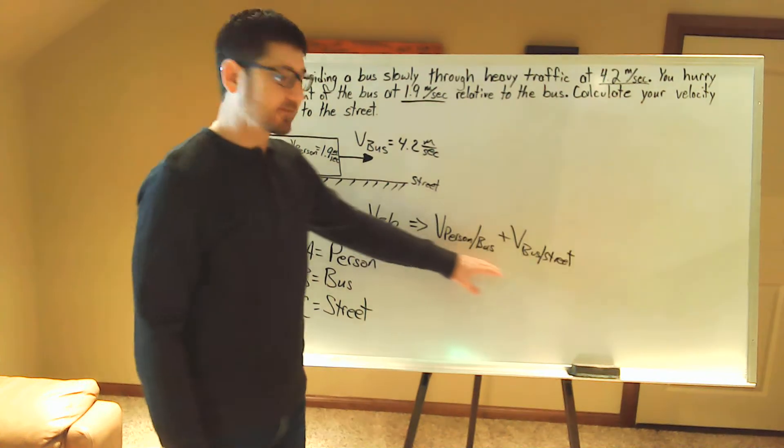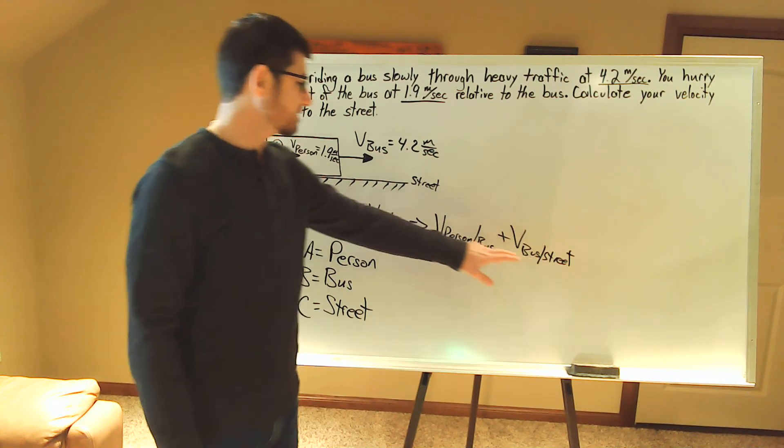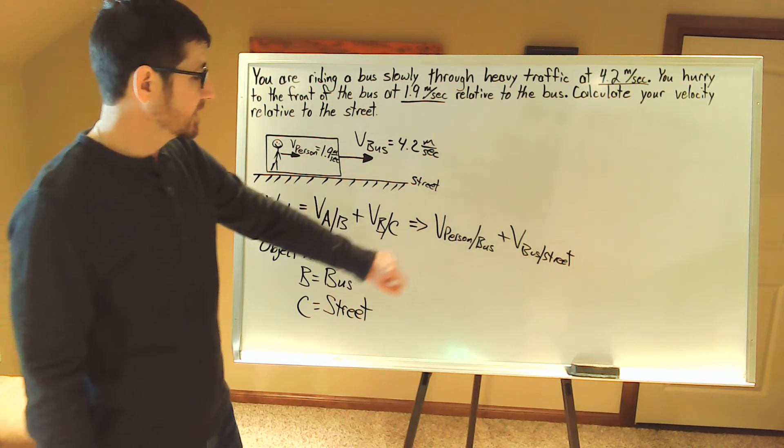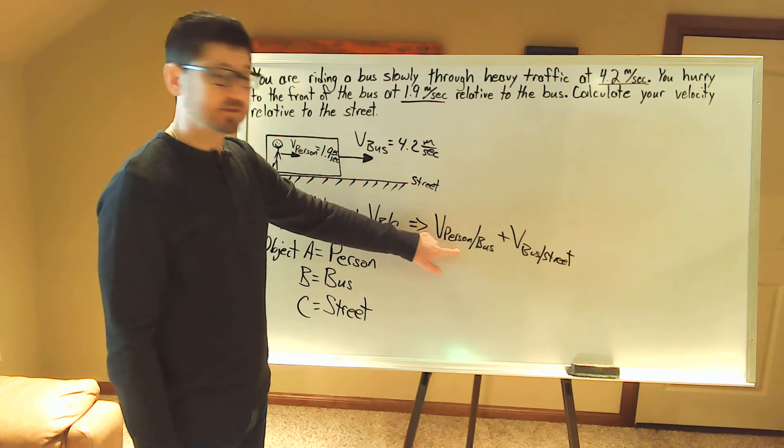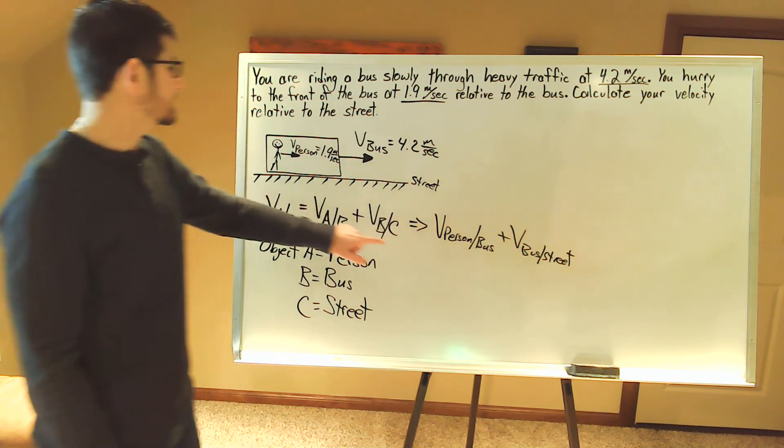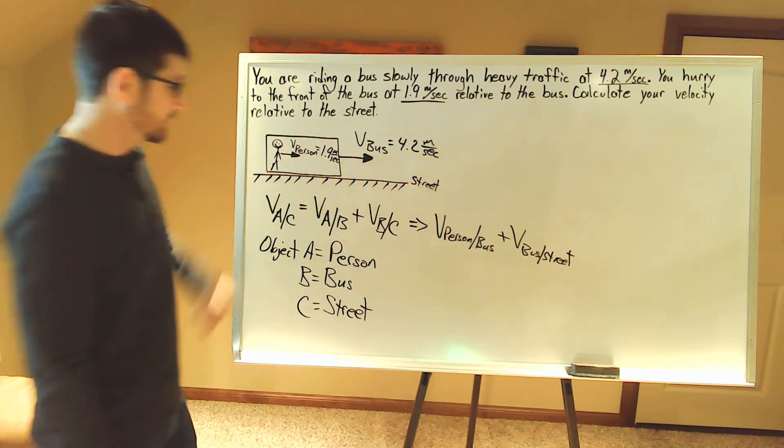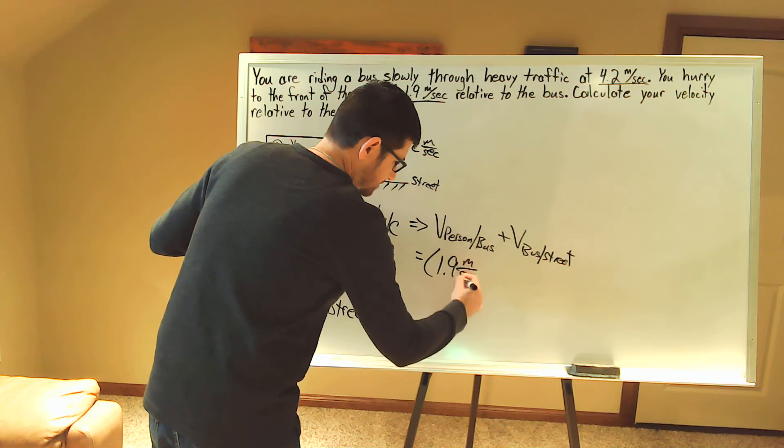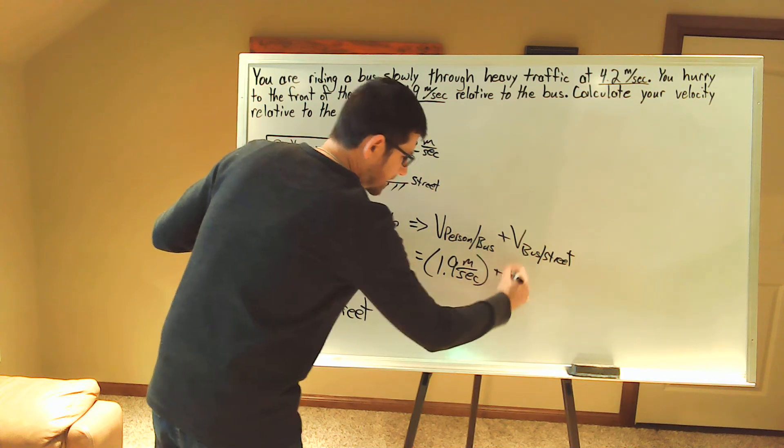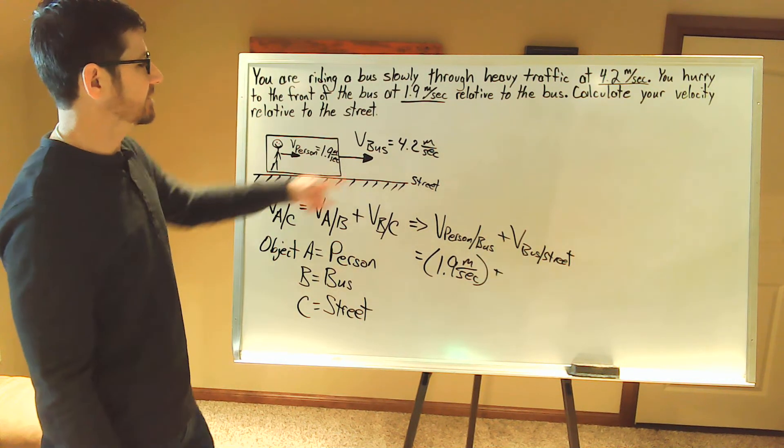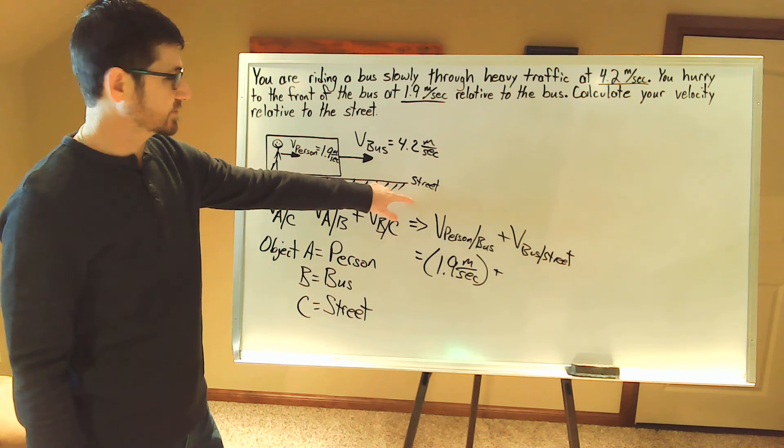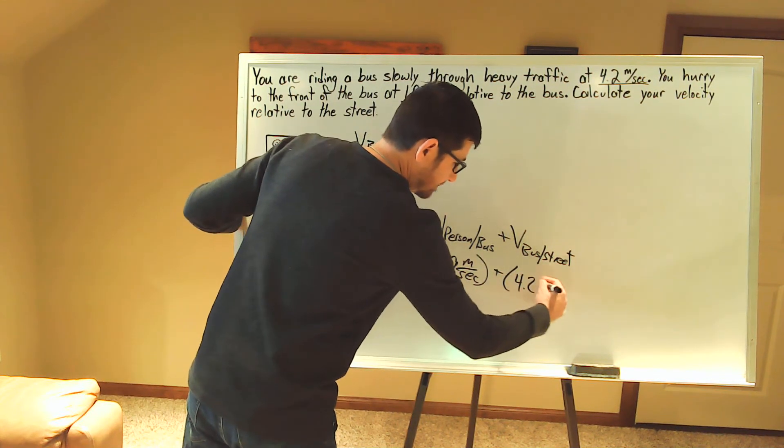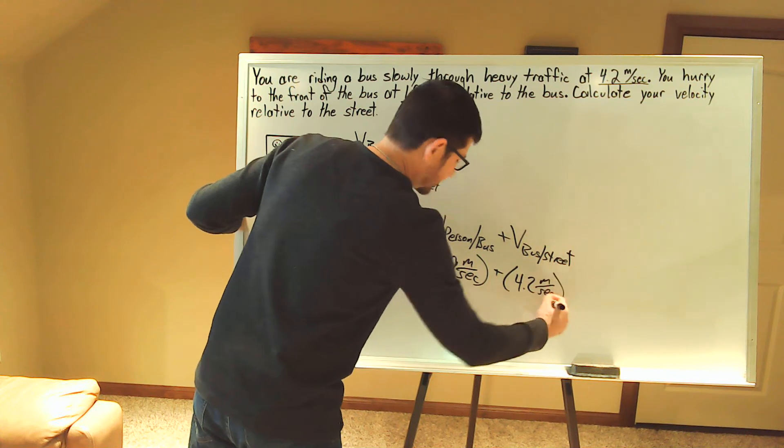And since we've identified this in our equation, it's now time to plug in our values. So the velocity of the person relative to the bus is 1.9 meters per second plus the velocity of the bus relative to the street, this is 4.2 meters per second.